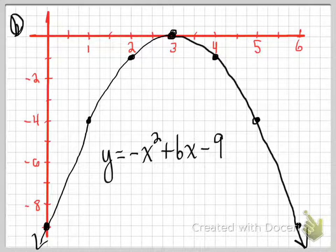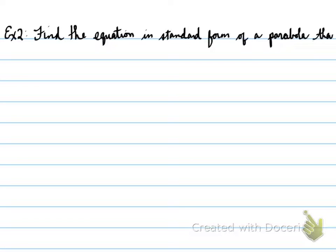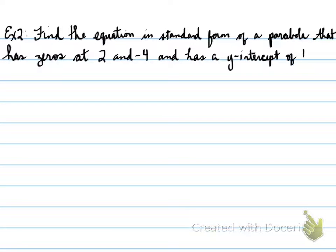Moving forwards, let's look at another question. Example number two asks you to find the equation in standard form of a parabola that has zeros at 2, negative 4, and has a y-intercept of 16. So, I'm giving you the zeros, and I'm giving you another point, the y-intercept.